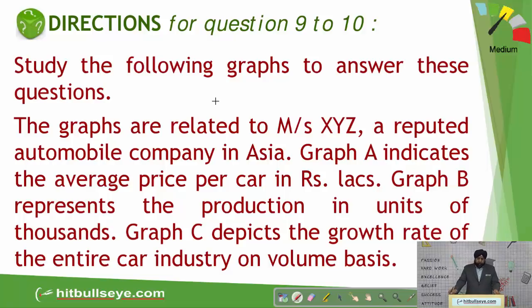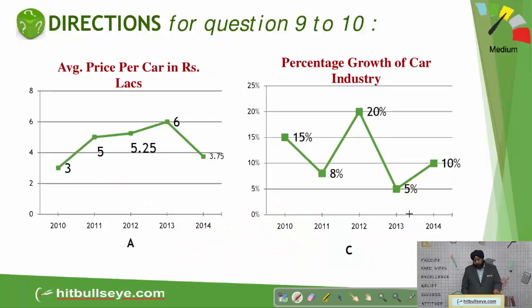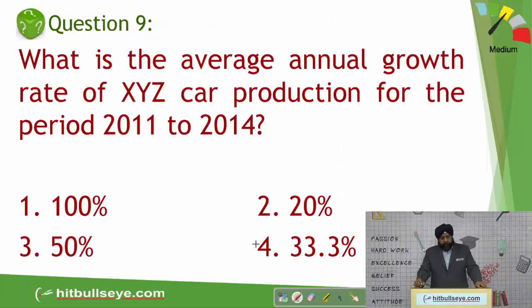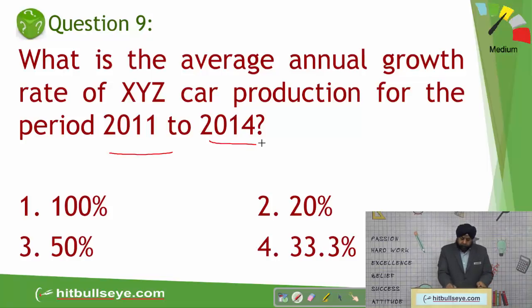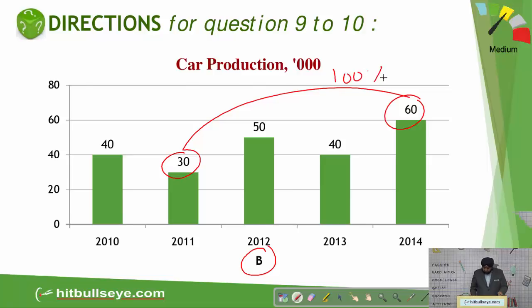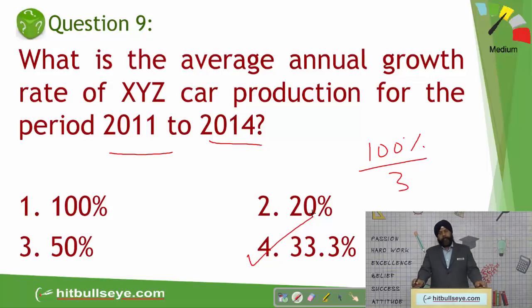Here comes the graph. Study the following graph to answer this question — it's a combination graph. Graph A indicates the average price per car, Graph B gives the production units, and Graph C gives the growth rate of the entire car industry on a volume basis. Let us see the first question: what is the average annual growth rate of XYZ car production for the period 2011 to 2014? Graph B is to be used. From 2011 to 2014 there is an increase from 30 to 60 — that is 100%. But the question asks about the average production growth rate, so it's 100 divided by 3 = 33.33. Hence, the fourth option is the answer.